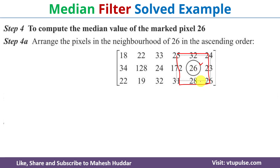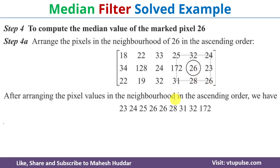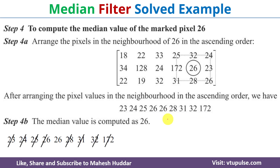Similarly, for the marked pixel 26, we use this 3x3 matrix. We get 9 values and arrange them in ascending order. Once arranged, we get 26 as the middle value, meaning 26 is the median value for the marked pixel 26.